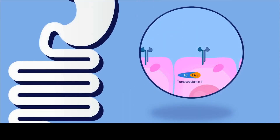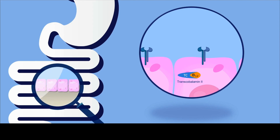The majority of absorption happens in the distal small intestine, or the terminal ileum. When B12 arrives there, the B12-intrinsic factor complex binds to a receptor called cubulin on the surface of mucosal cells. That complex is then internalized through endocytosis, after which intrinsic factor is broken down and vitamin B12 is liberated and bound to another protein called transcobalamin 2.